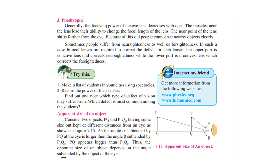The third defect of the eye is called presbyopia. As we grow older, the capacity of the ciliary muscles decreases and the focusing power of the eye lens reduces with age. The muscles near the lens lose their ability to change the focal length, and the near point shifts further away. That is why most elderly people use reading glasses.